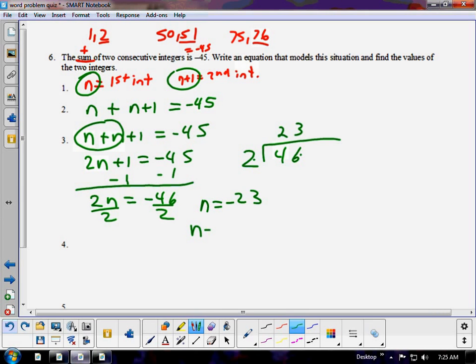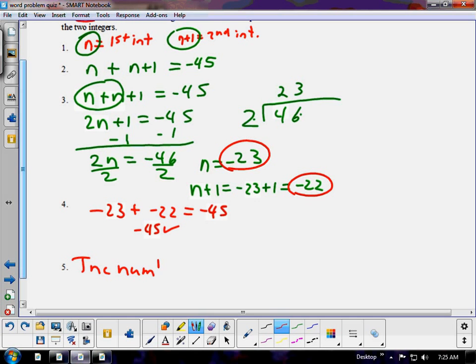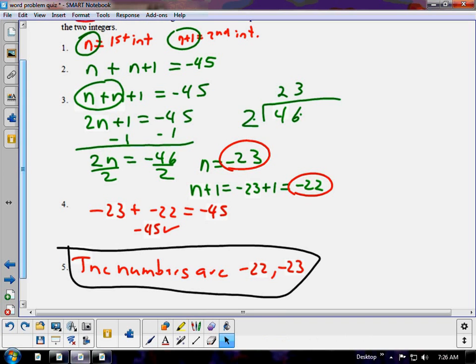Now, add 1 to negative 23. Now, be careful. Negative 23 plus 1 equals negative 22. So, my numbers should be negative 23 and negative 22. They are consecutive. Do they add up to negative 45? And the answer is yes, they do. And it checks. So, the numbers are negative 22 and negative 23. There's other ways to do this question, but I find this is the quickest way to do this one. We'll get on to the last one.